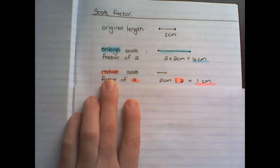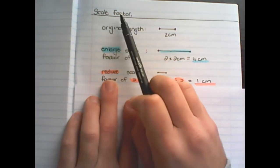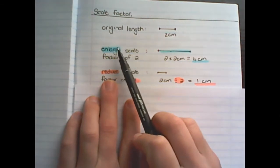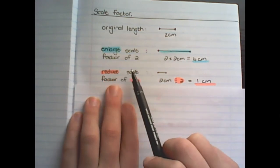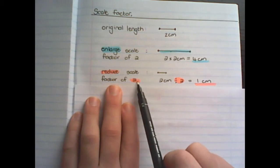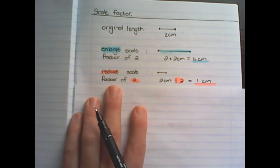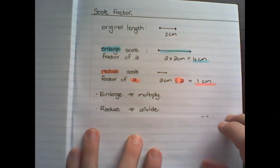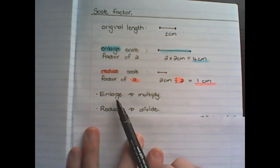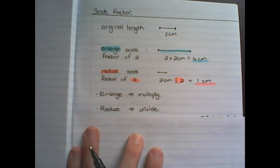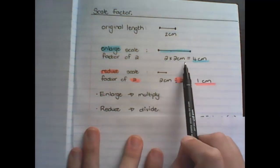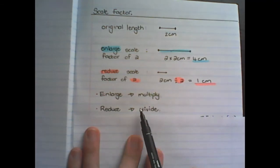So it's important to understand: with a scale factor we can either enlarge by multiplying the length, or we can reduce the original length by dividing. Notice that in this example the scale factor remained two. So in order to enlarge a length we multiply the original length by the scale factor, and in order to reduce the length we divide the original length by the scale factor.